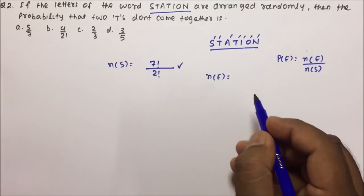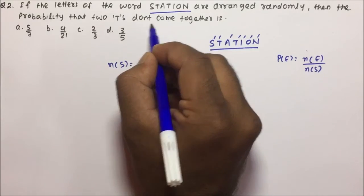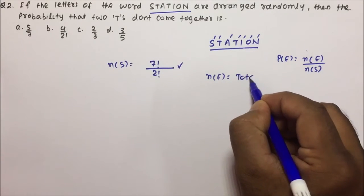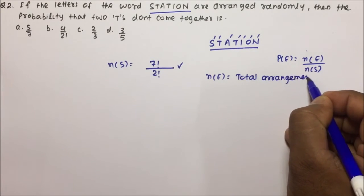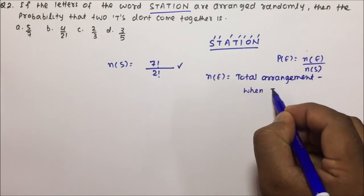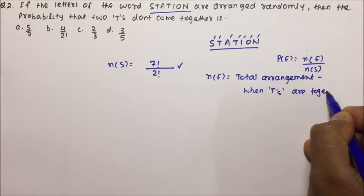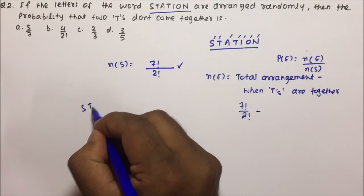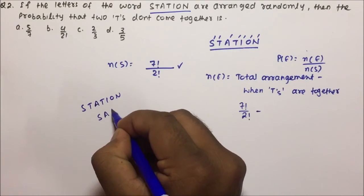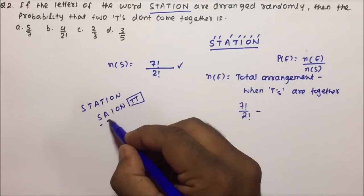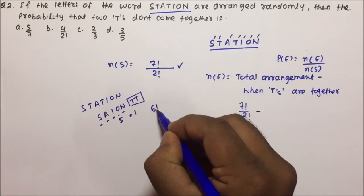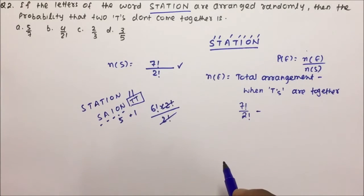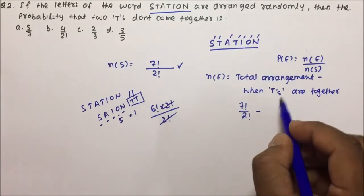For the favorable outcome NE, we want T's to not come together. So NE = total arrangement minus the arrangement when T's are together. Total arrangement is 7!/2!. When T's are together, we put both T's in a box with S, A, I, O, N: that gives 5 + 1 = 6 letters, so 6 factorial arrangements. Since T is repeated, divide by 2!. So the T's-together arrangement = 6!/2! · 2! = 6!. Therefore NE = 7!/2! − 6!.